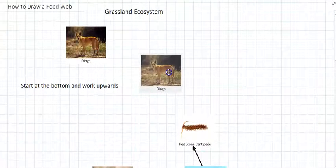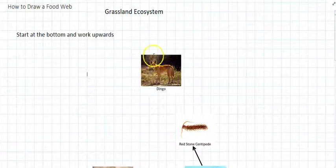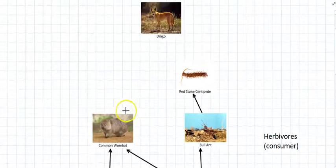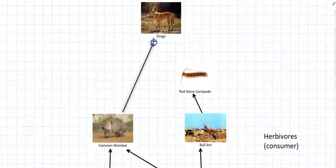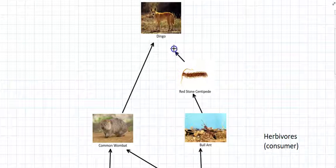And then we have a dingo. Well, dingoes are the top predator in a grassland. Nothing eats those at all. So a dingo is at the very top. And we're going to draw an arrow going from the wombat to the dingo because dingoes eat wombats. And sometimes dingoes will eat insects too if they're really hungry and desperate for food.